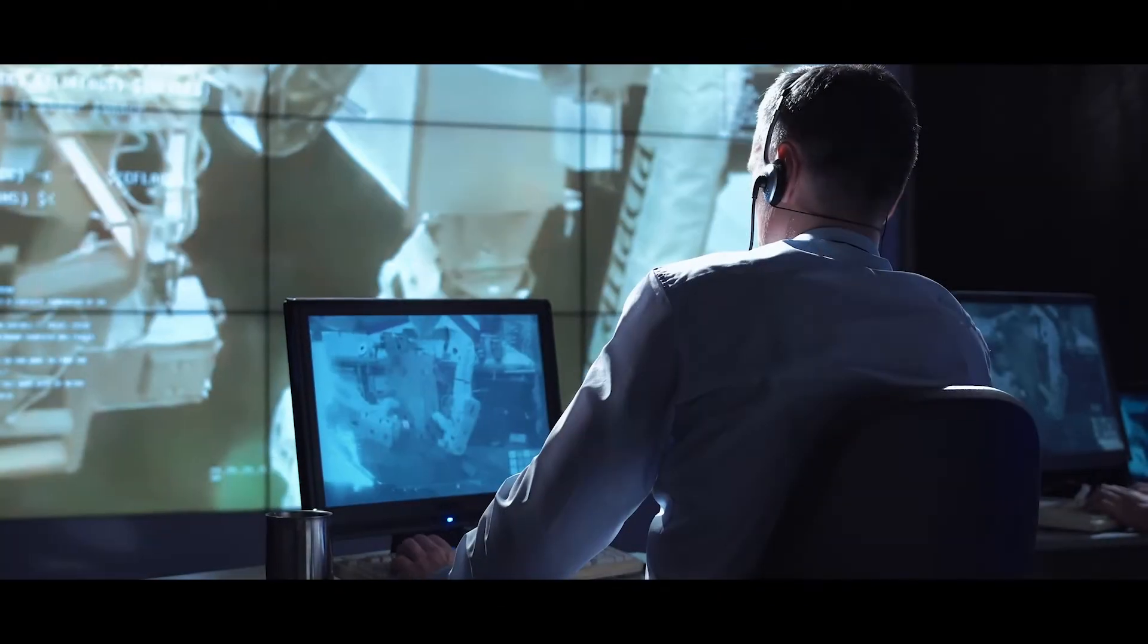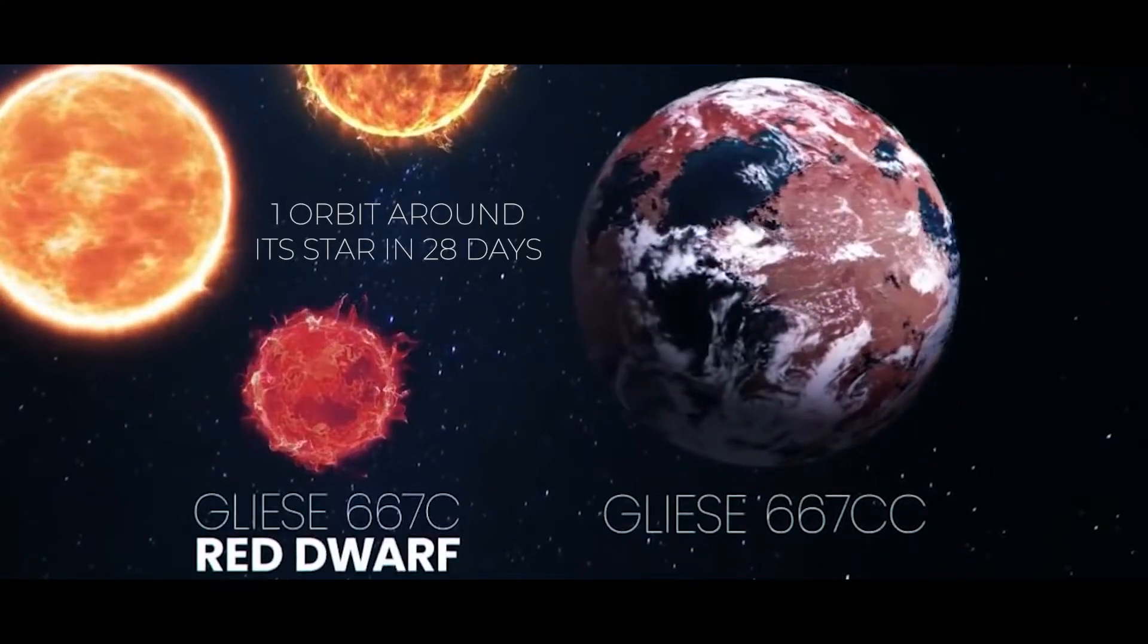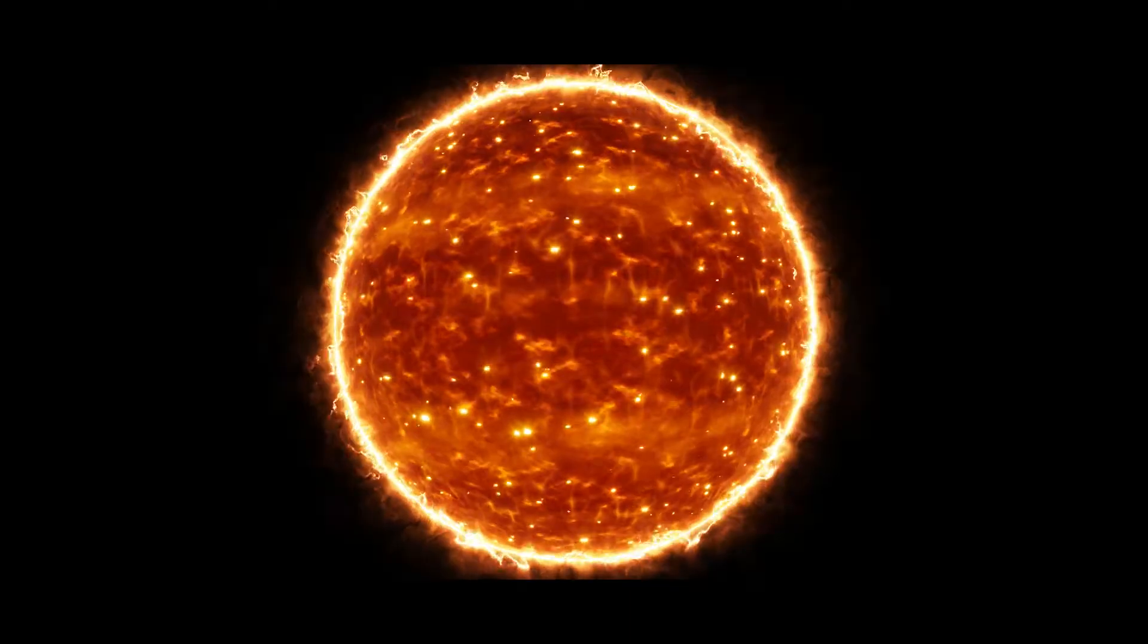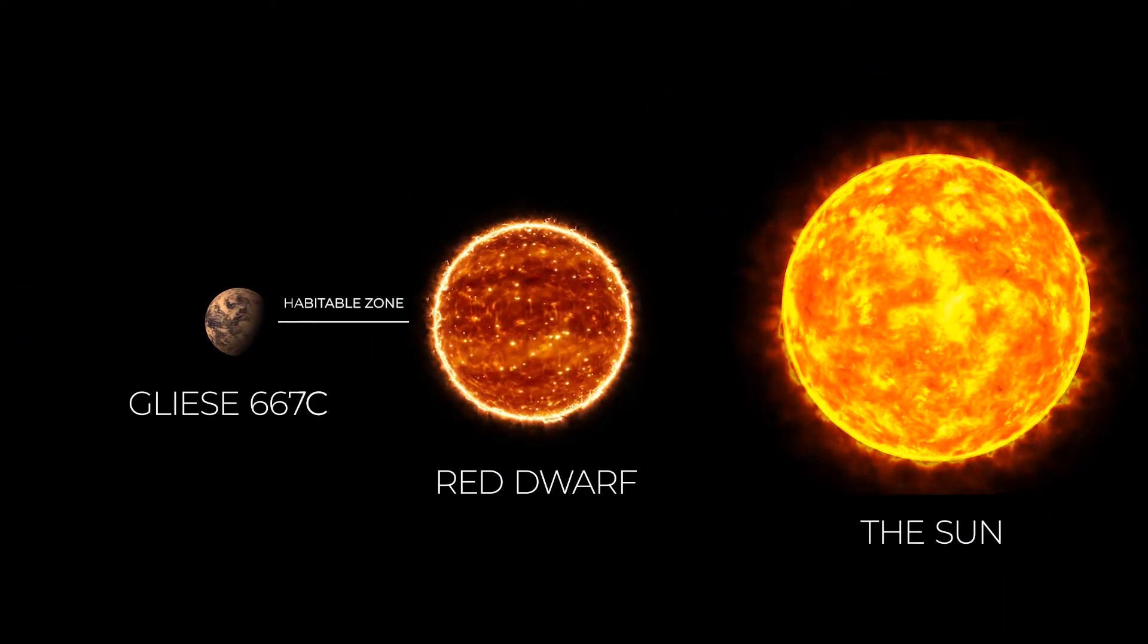According to NASA, Gliese 667Cc completes one orbit around its star in 28 days. But it is a red dwarf and is a fair amount cooler than our sun. So the planet is thought to be located in the habitable zone.